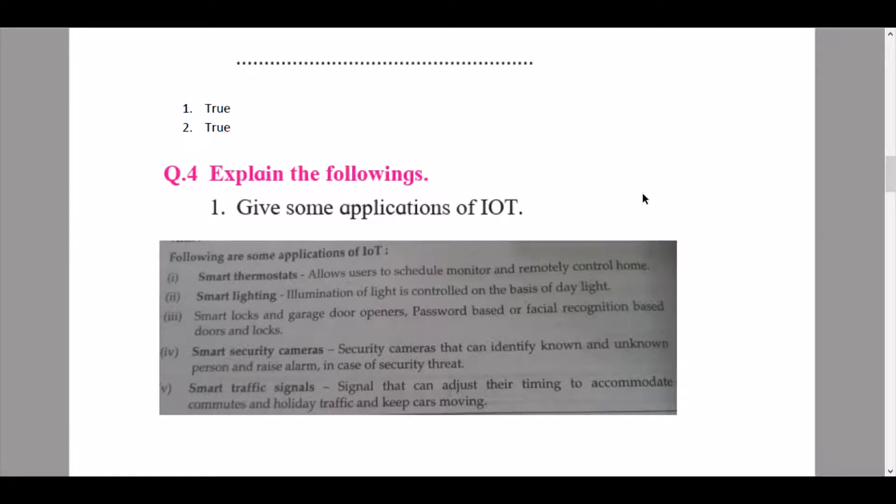Fourth application: smart security cameras - security cameras that can identify known and unknown persons and raise alarm in case of security threat. Like there are a few applications: when you have kept a facial recognition as an app lock, if the wrong password has been typed in or the wrong face has been shown in front of the camera, it just takes a snapshot and sends it to the user, and your phone goes on a total lockdown based on the app you are using. Fifth application: smart traffic signals - signals that can adjust their timing to accommodate commutes and holiday traffic and keep cars moving. This is a good solution to the traffic jams in Mumbai.